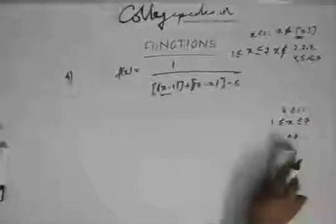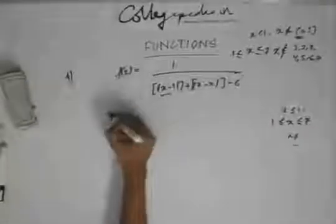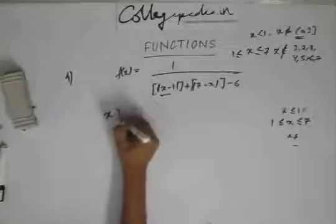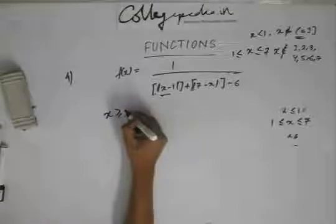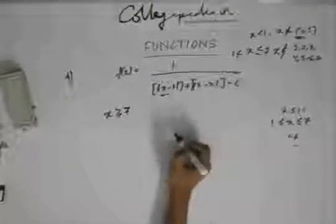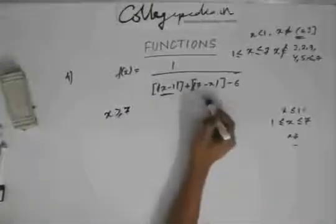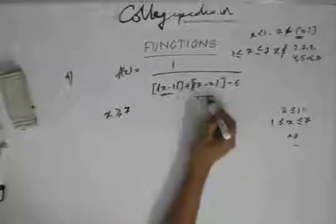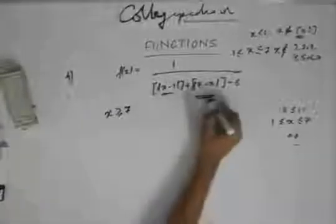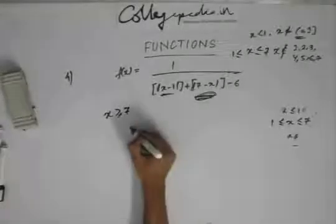Now I am left with the last case where x is greater than or equal to 7. In this interval, this expression is positive but this one is negative, so I need to change the sign in this case.